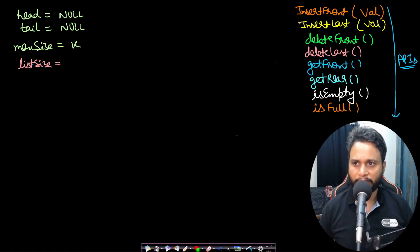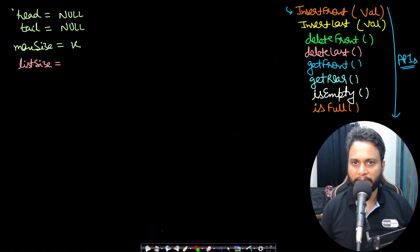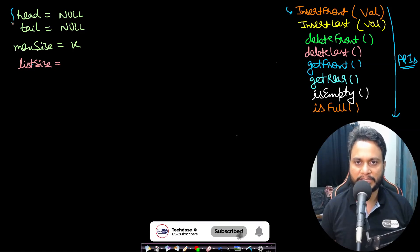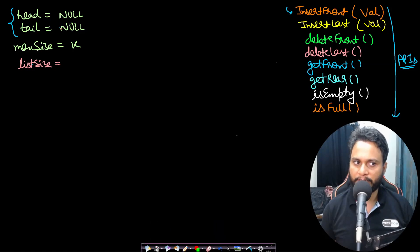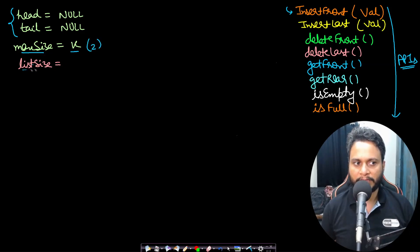Now let's see the implementation of each API one by one. First we will look at insert front. Let's say we are implementing it using a doubly linked list where head and tail pointers are null — meaning next and previous of both are null. The maximum size assumed is k, and in this case k equals 2. The list size, which is the current size, is 0.